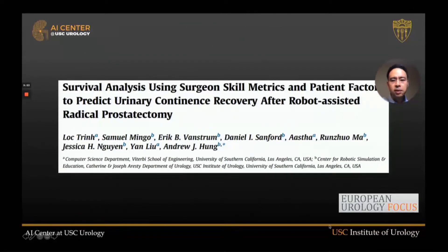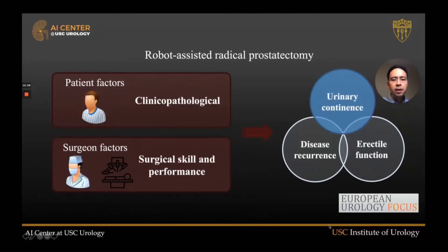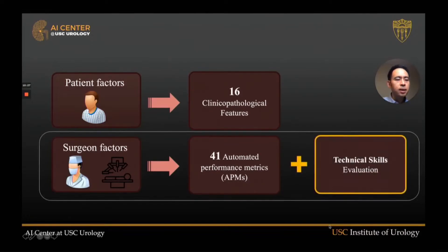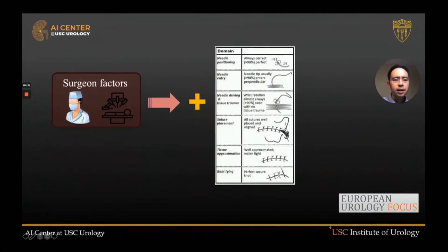Our most contemporary paper, in European Urology Focus, uses deep learning-based survival analysis combining surgeon data and patient factors to predict time to urinary continence recovery after prostatectomy. Patient factors included age, body mass index, and comorbidities. Surgeon factors included automated performance metrics and technical skills evaluation — for example, during the vesicourethral anastomosis: needle positioning, how well the surgeon holds the needle, the angle the needle enters the tissue, and wrist rotation while driving the needle through tissue.